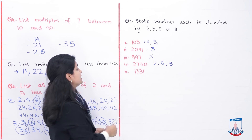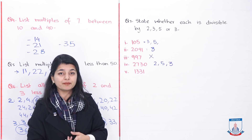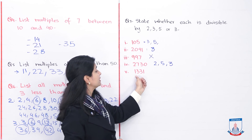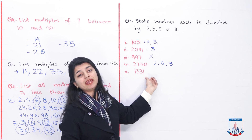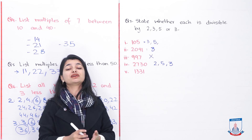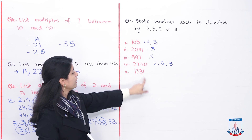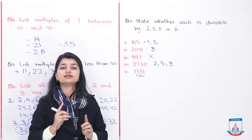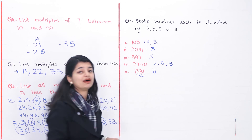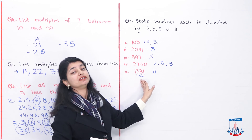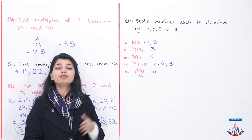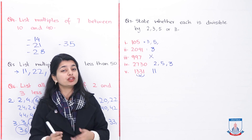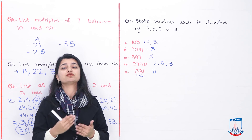For 1331, it is not divisible by 2 or 5 since it ends in 1. Checking the divisibility test for 11, it is divisible by 11 but not by any of the other numbers. You have seen how divisibility tests are applied to determine which numbers are divisible without doing full division — simply apply the rule and the test to get your answer.